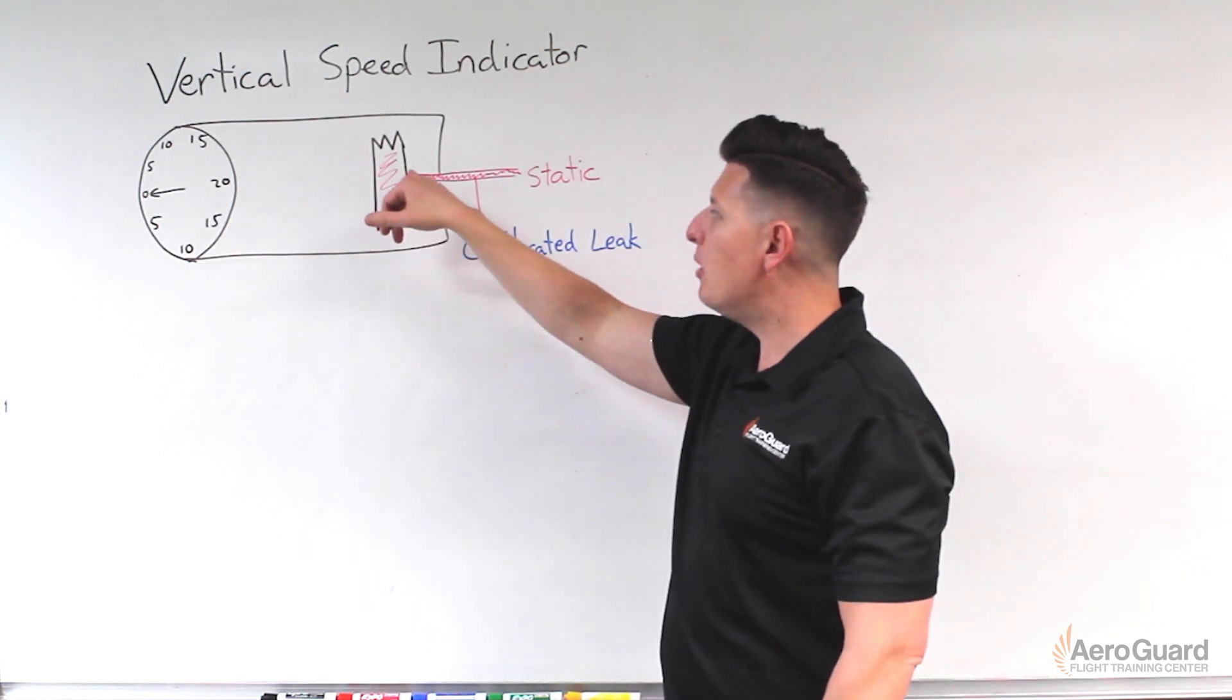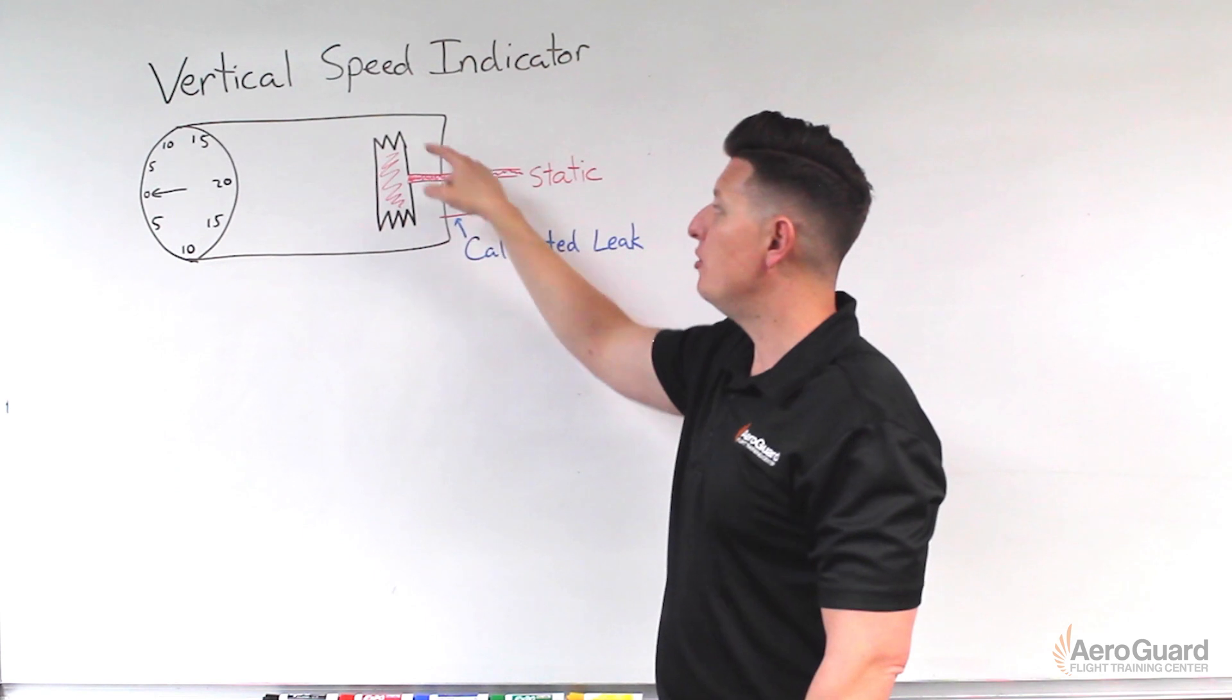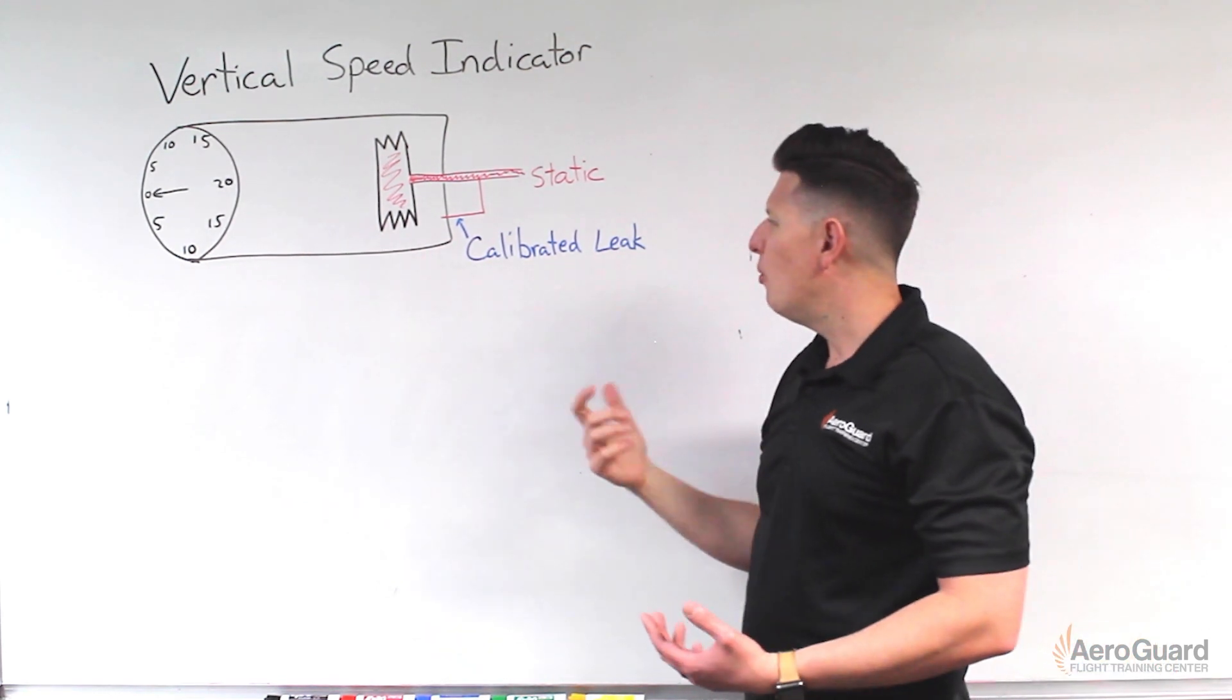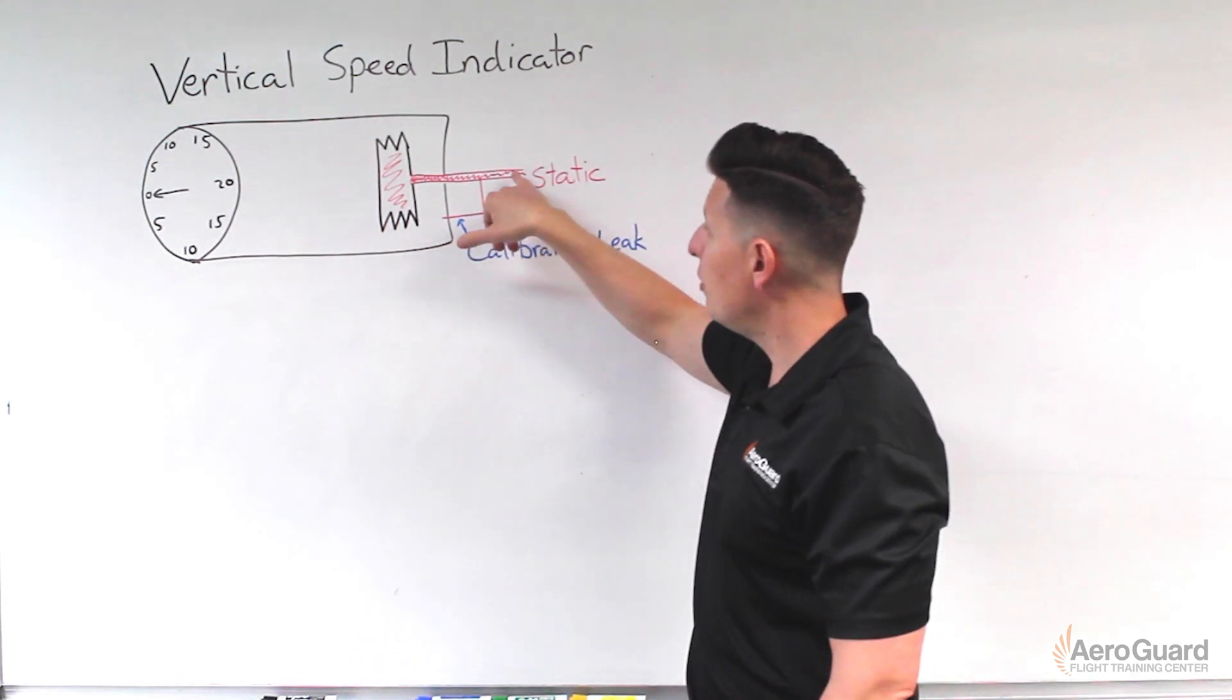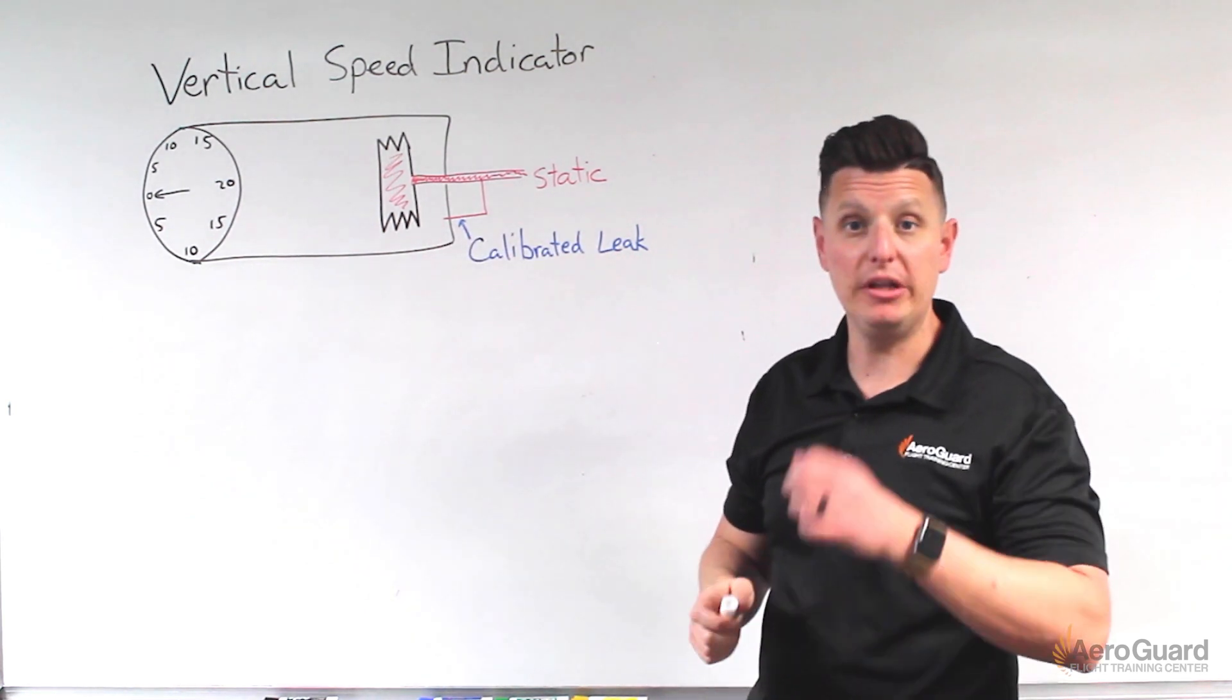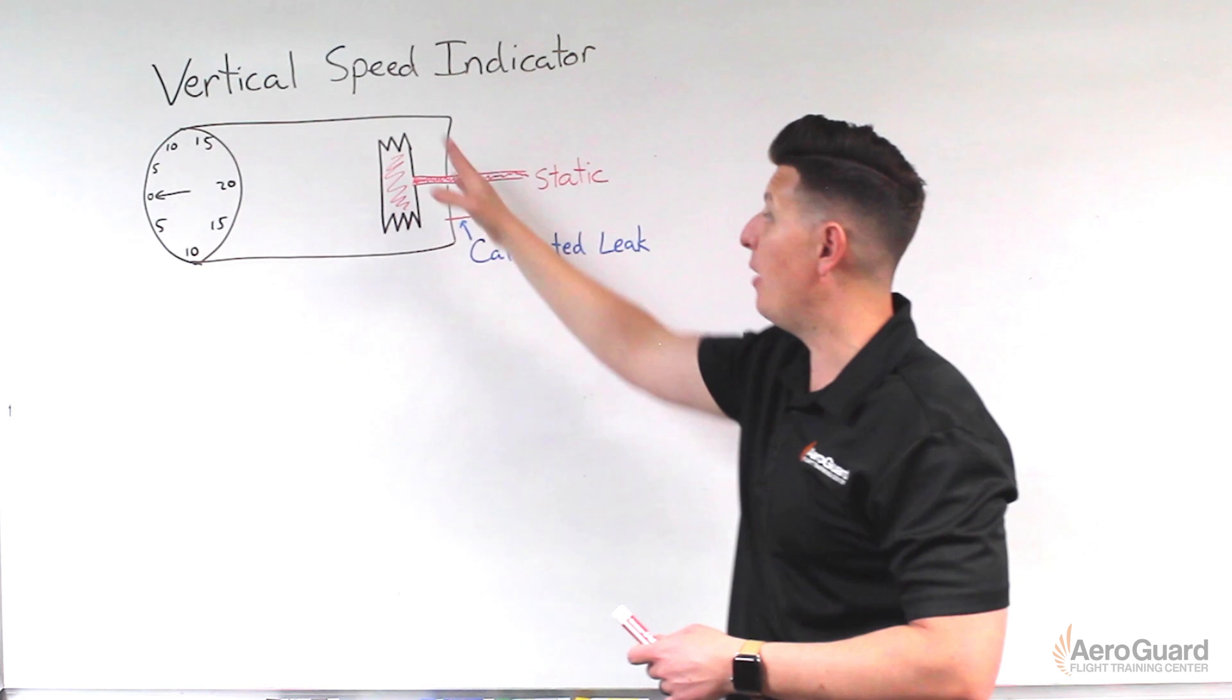We're going to use the static pressure source, and that static pressure source is going to go directly into this diaphragm. Then off of that source there's going to be what is known as a calibrated leak. What I tried to show with this image is the static pressure going into the diaphragm is a normal entry. This calibrated leak is a really small line, so it's restricting the amount of air that can pass in or out of the case around the diaphragm.